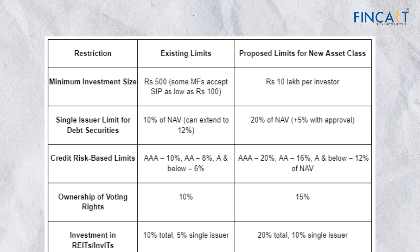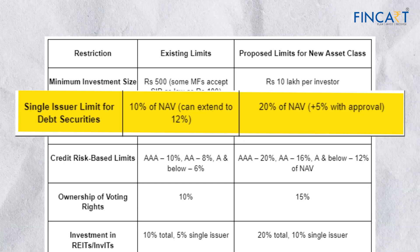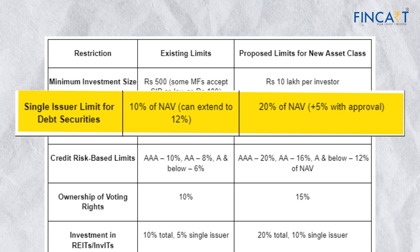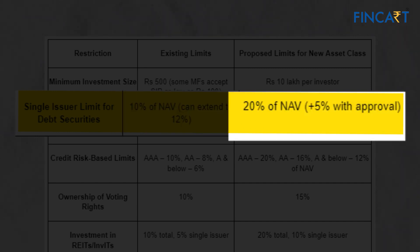Now let us understand the criteria set for debt investment in the new asset class. In a mutual fund, the single issuer exposure limit in a debt paper is maximum 10% of the NAV. Whereas in the new asset class, exposure to a single issuer can be up to 20% of the NAV.